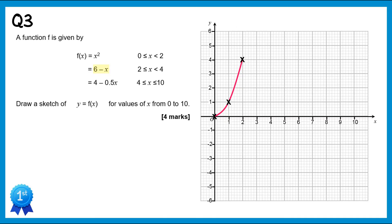We've got 6 minus x for x values from 2 to 4. So 6 minus 2 is 4 — we already have (2, 4). Then 6 minus 3 is 3, giving the point (3, 3). And 6 minus 4 is 2, giving (4, 2). That's the end of that short section.